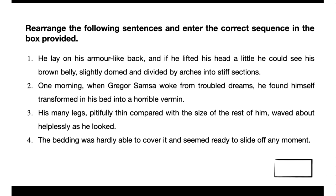Hello, CAT aspirants, hope you are doing well. Here we have another view-based question — ordering of sentences, also called para-formation questions. The directions say: rearrange the following sentences and enter the correct sequence in the box provided. This kind of question asks us to rearrange four sentences to form a coherent paragraph by determining the proper sequence. The options are sequences of the four sentence numbers.